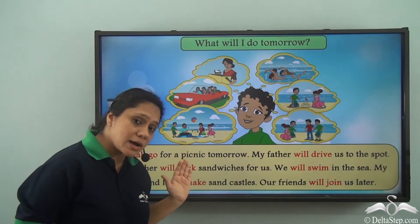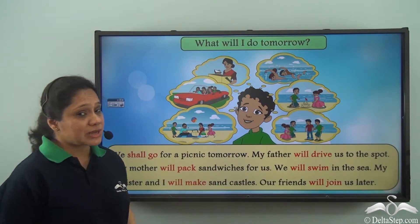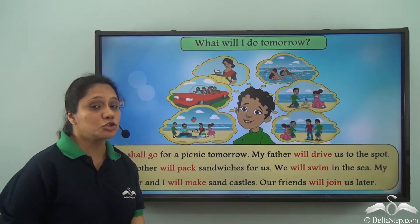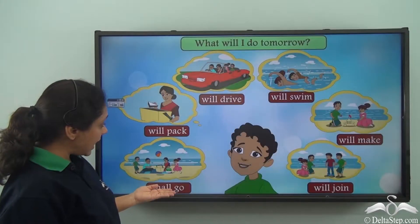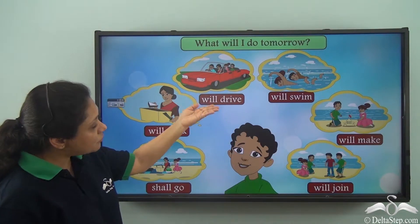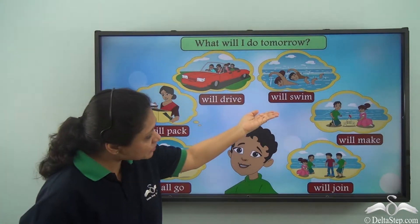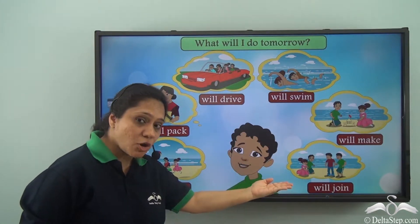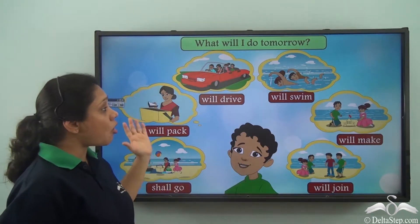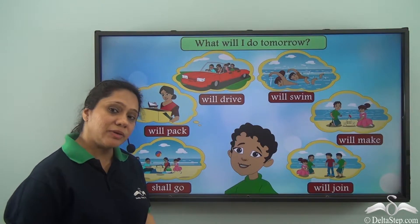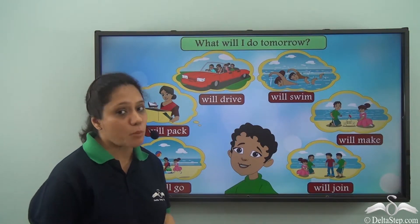So which are the words which tell us about the actions that I will do tomorrow? Shall go, will pack, will drive, will swim, will make, will join — these are all the verbs that tell us about actions that will happen tomorrow.